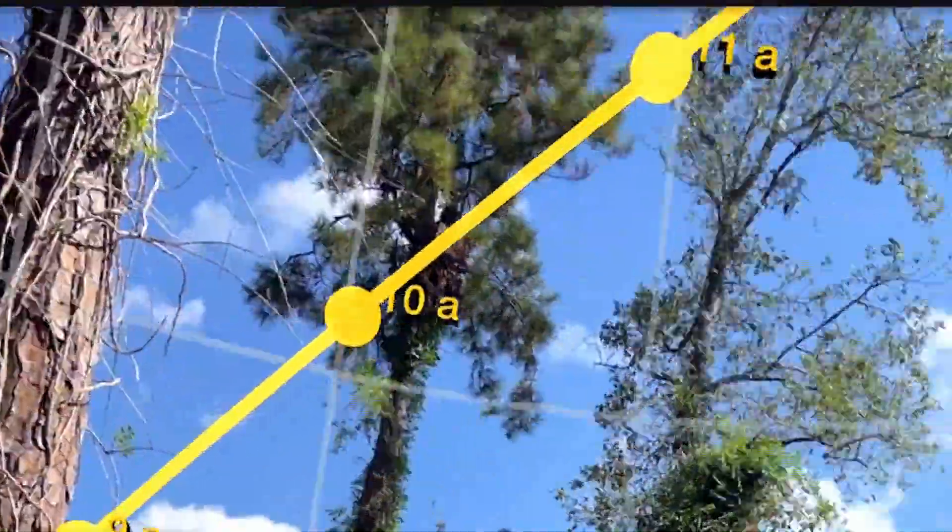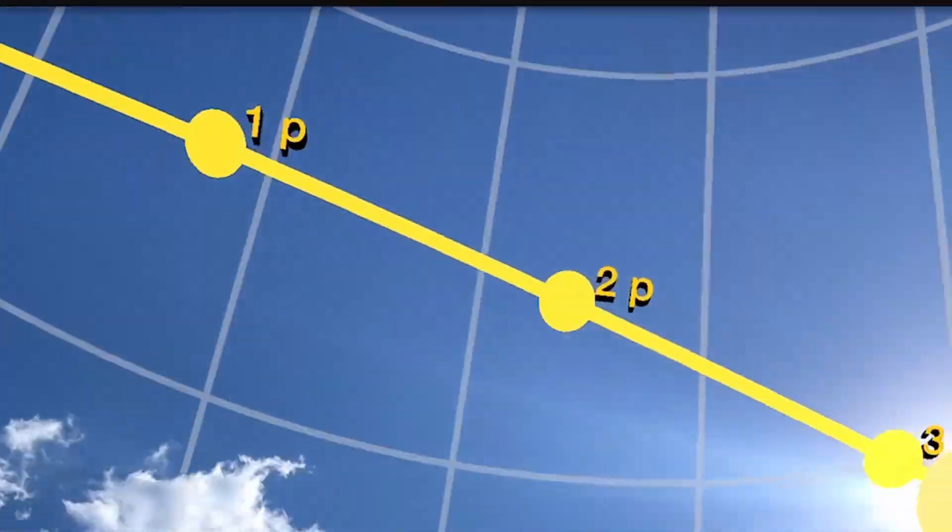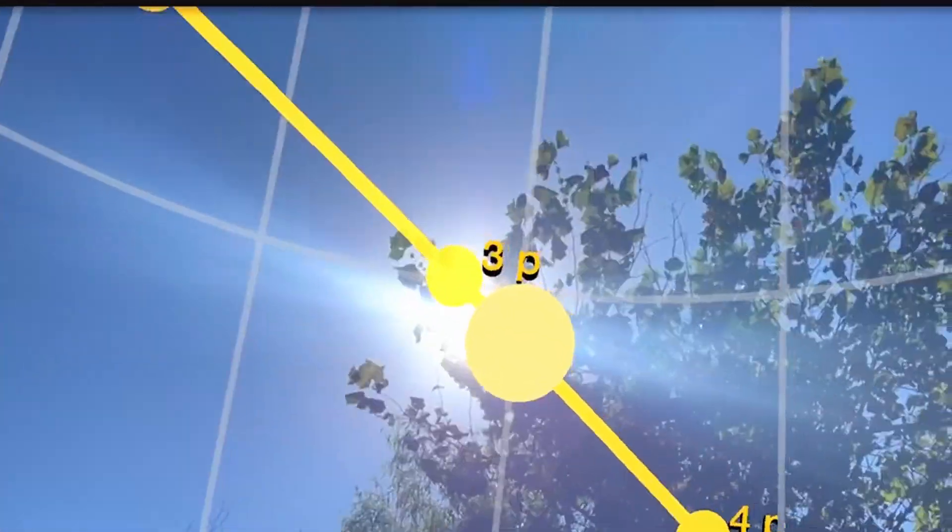So why is Sun Surveyor useful for our homestead? Optimal solar panel placement — we have a lot of trees. By understanding the sun's exact path, we can position our solar panels to capture the most sunlight through the day. Efficiency gains: proper placement reduces energy loss and increases the overall efficiency of our solar system.